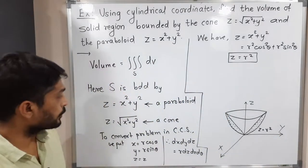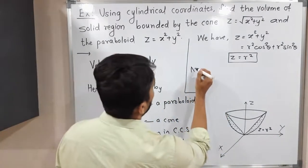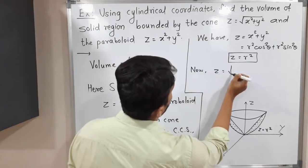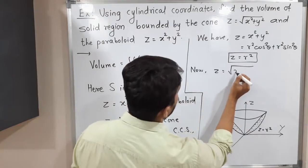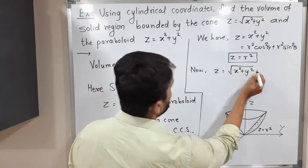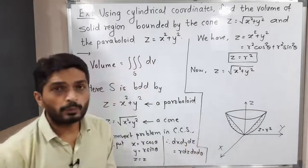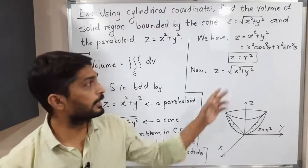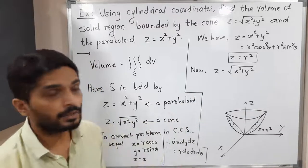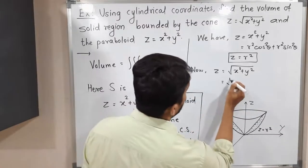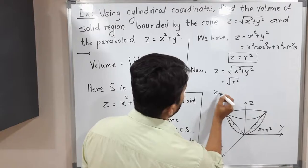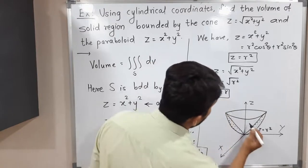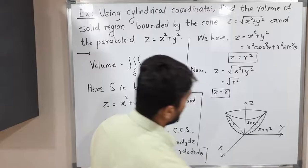Now let us convert the cone. The equation of the cone is z equals the square root of x squared plus y squared. Substituting x equals r cos θ and y equals r sin θ, we get x² plus y² equals r², so the square root cancels. Therefore, z equals r is the equation of the cone in cylindrical coordinates.